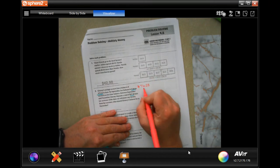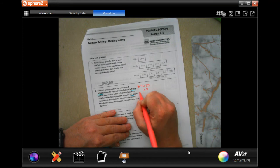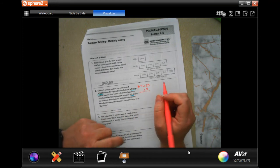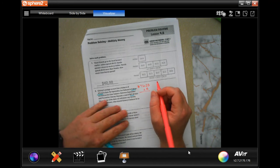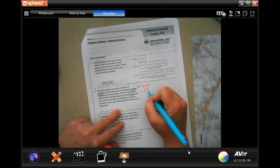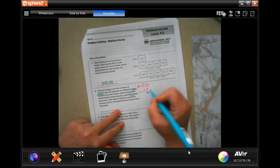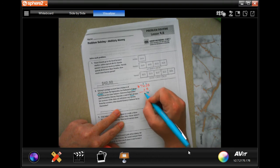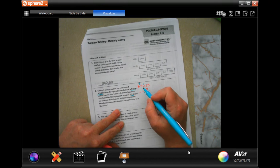So 5 times 3 is 15, 5 times 2 is 10 plus 1 is 11, carry 1. 5 times 6 is 30 plus 1 is 31. 5 times 7 is 35 plus 3 is 38. We went in one two places here, we need to go in one two places there.